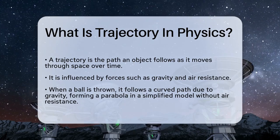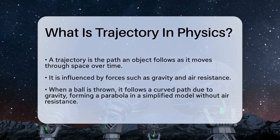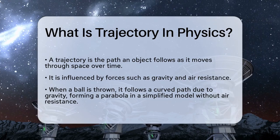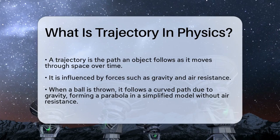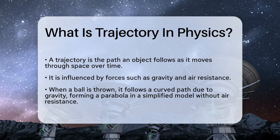A trajectory is essentially the route an object takes as it moves through space over time. It's influenced by various forces, such as gravity, and in some cases, air resistance.